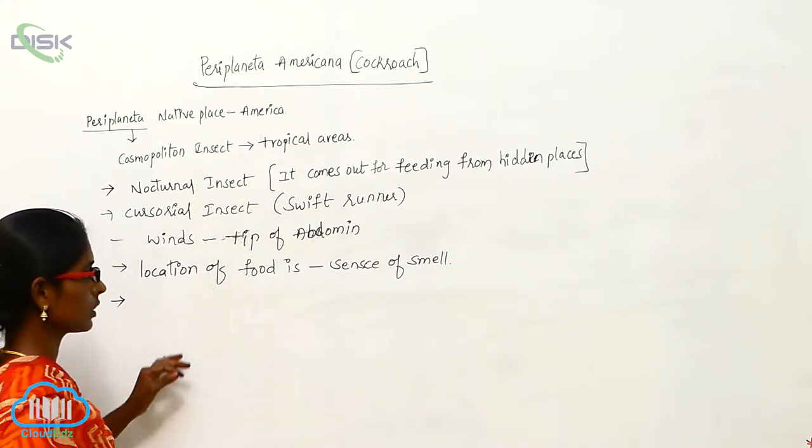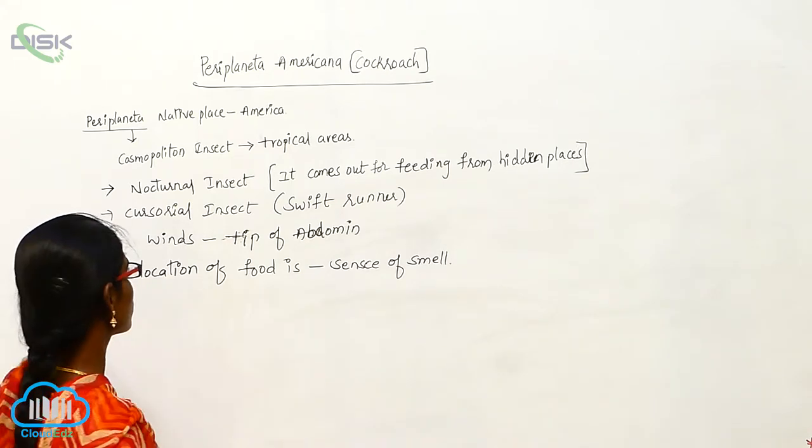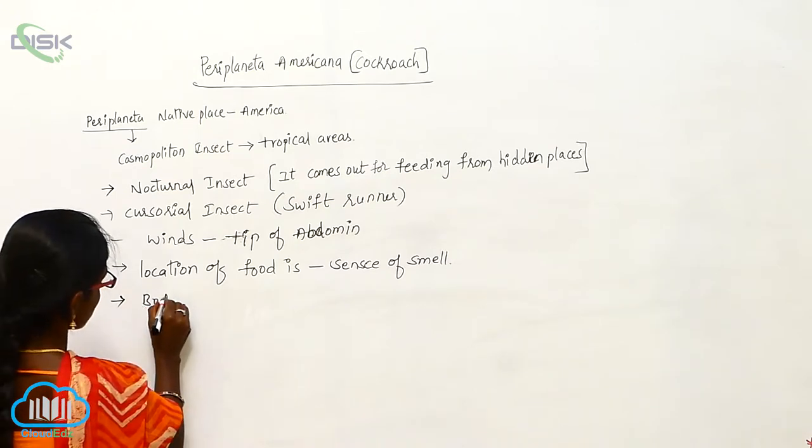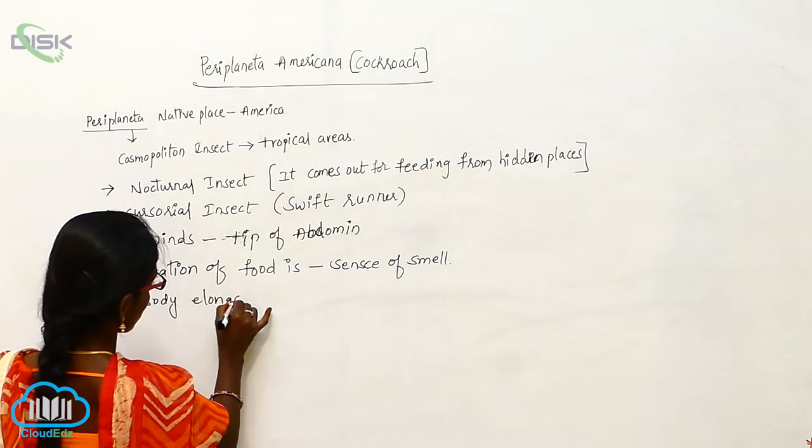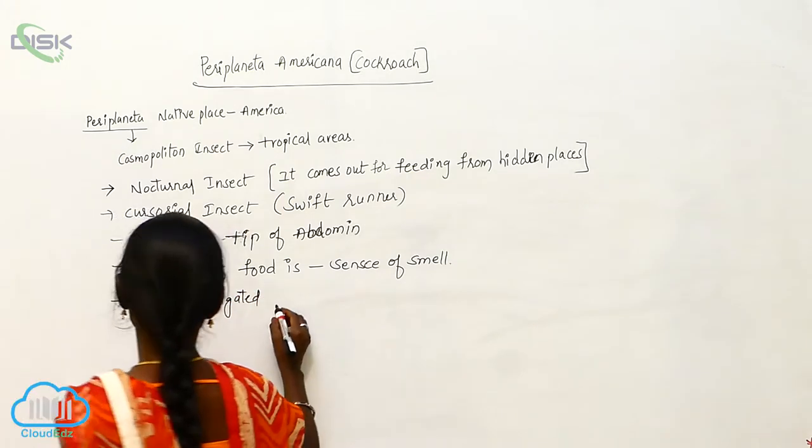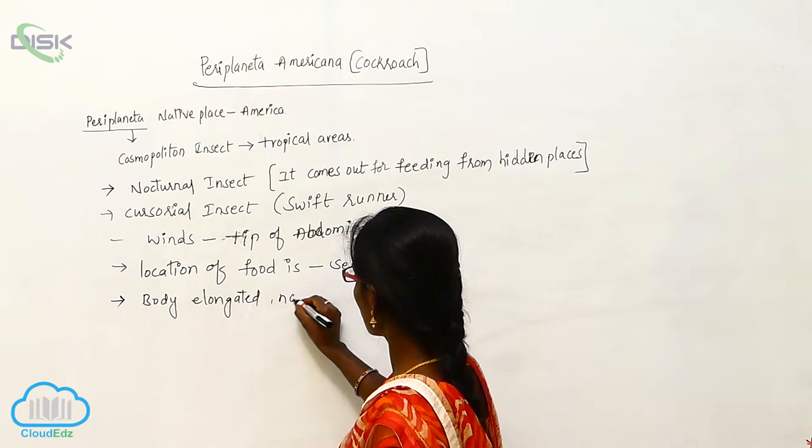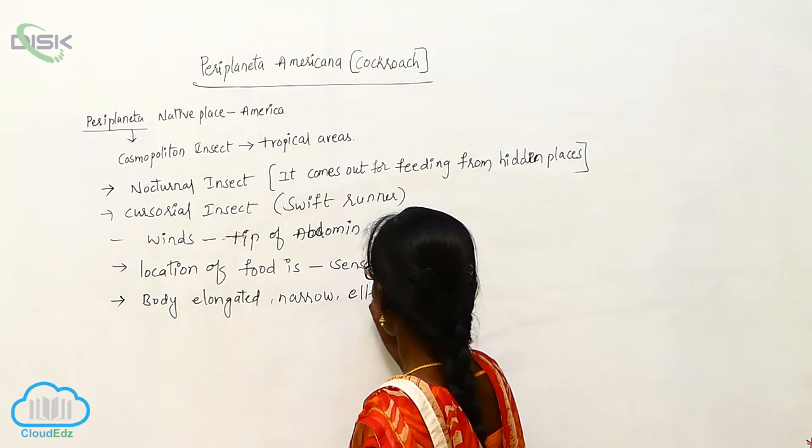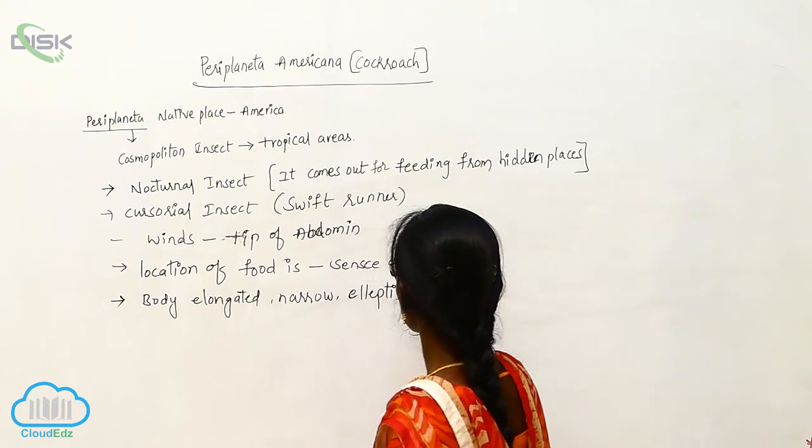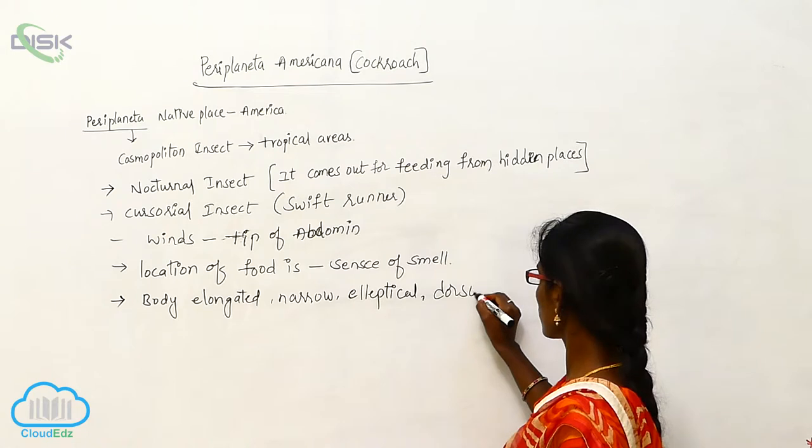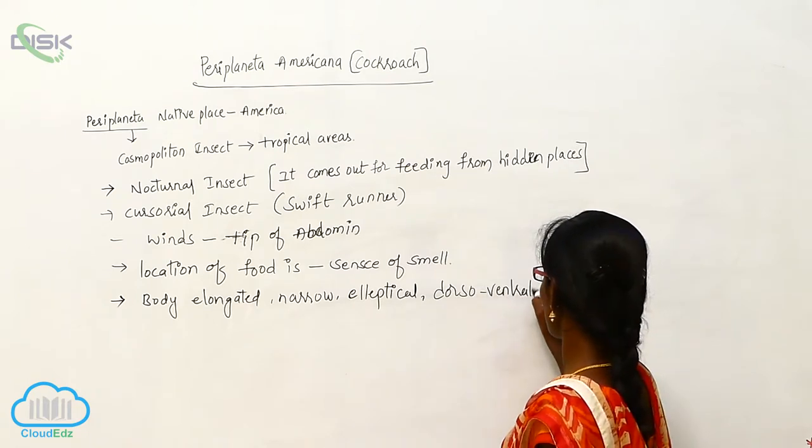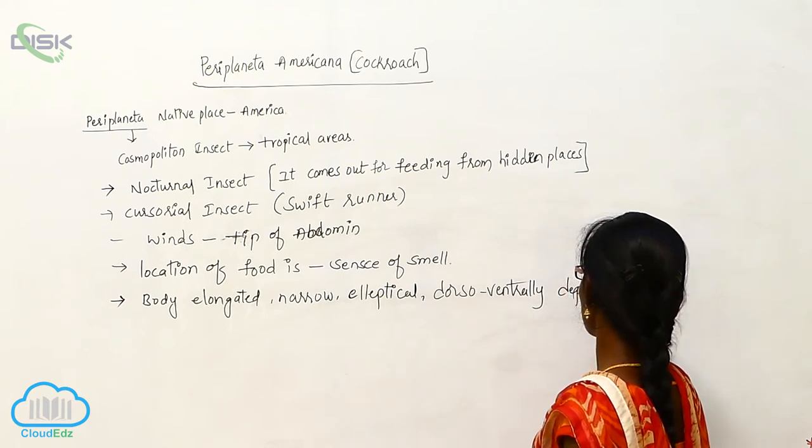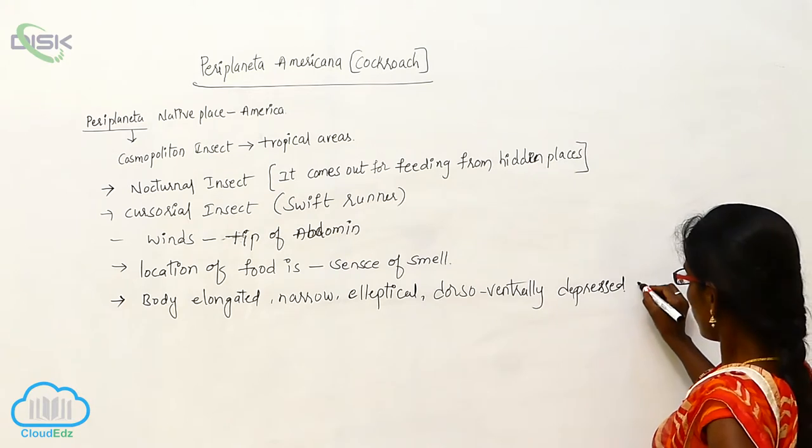The body is elongated, narrow, elliptical, dorsally-ventrally depressed animal.